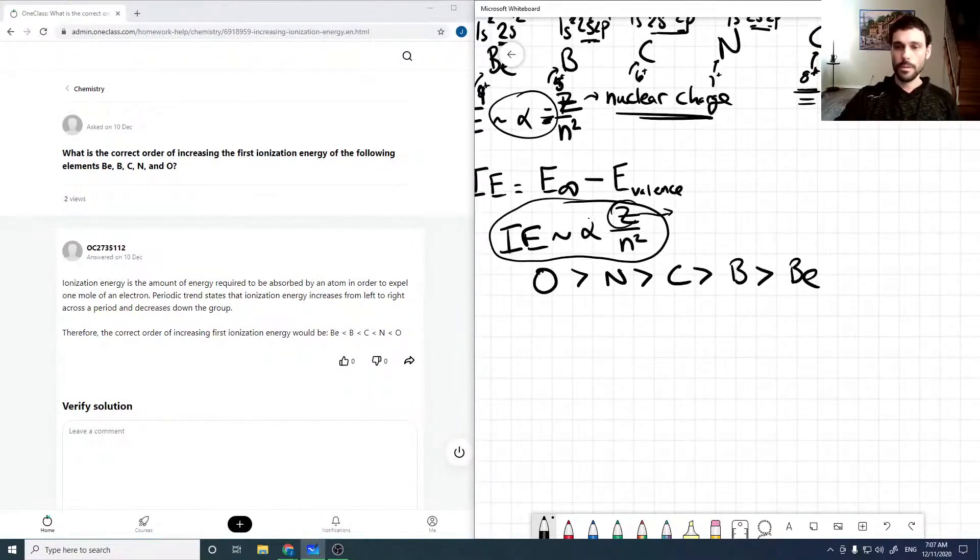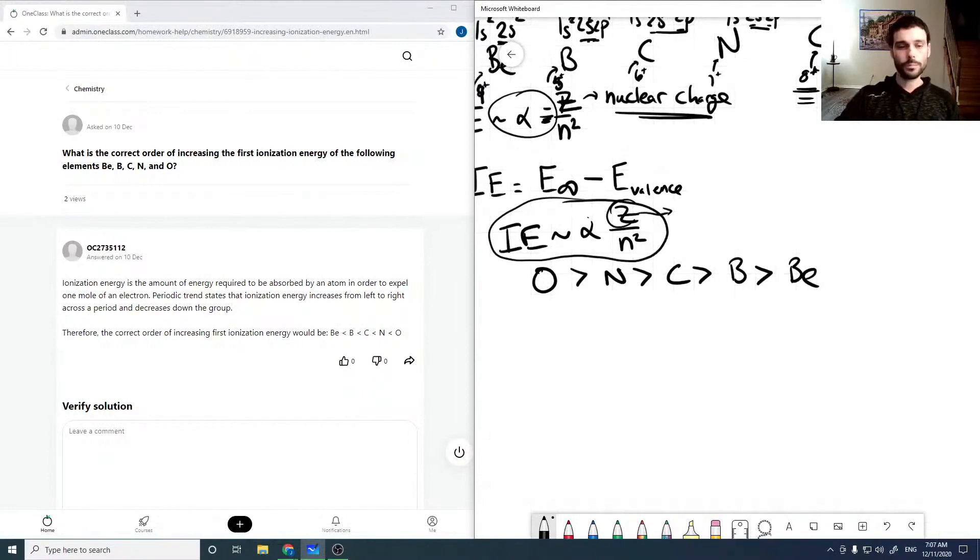If we check the solution here, it increases from left to right across the table and decreases down a group. Looking at the ordering of our ionization energies, it's oxygen greater than nitrogen greater than carbon greater than boron greater than beryllium. That looks good.